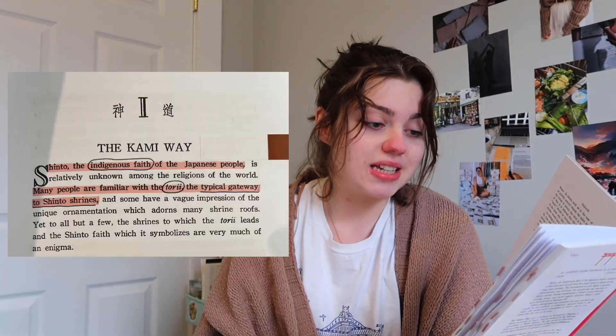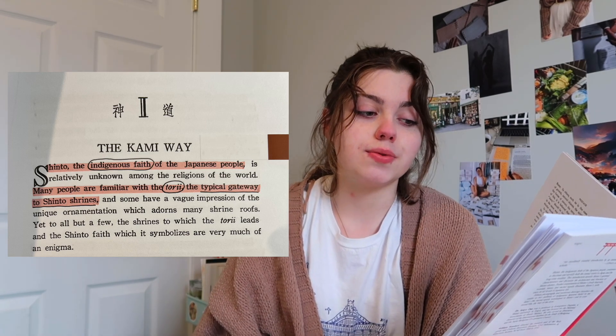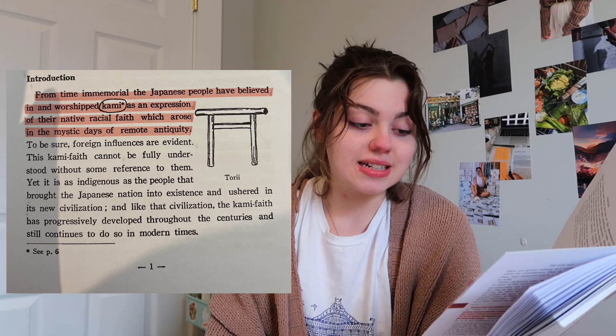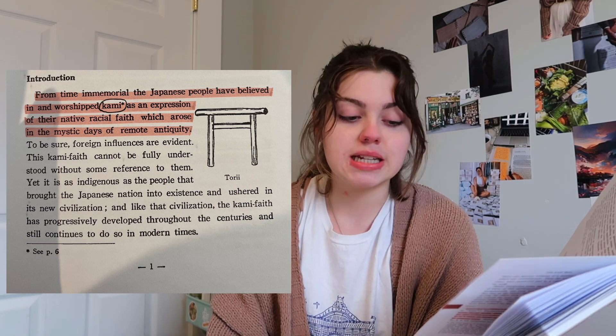On page one of this book it says: 'Shinto, the indigenous faith of the Japanese people, is relatively unknown among the religions of the world.' Which is very true — I know many people who were completely lost when I brought Shinto up. From time immemorial, the Japanese people have believed in and worshipped kami as an expression of their native racial faith, which arose in the mystic days of remote antiquity. So what are kami? Kami are the object of worship in Shinto. Fundamentally the term is an honorific for noble sacred spirits, implying adoration for their virtues and authority. All beings have such spirits, so in a sense all beings can be called kami or regarded as potential kami. In Shinto, anything can have these spirits, but not anything can be worshipped as kami.